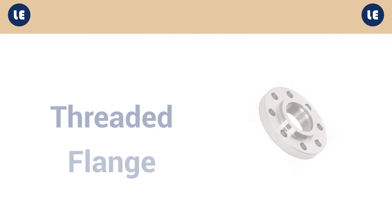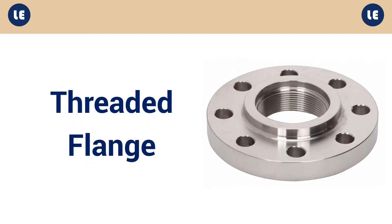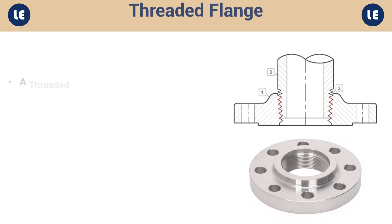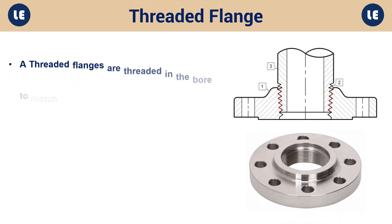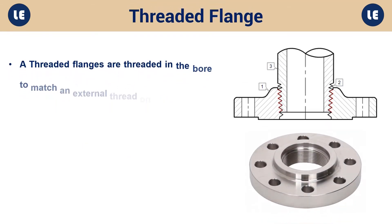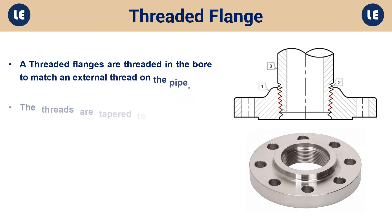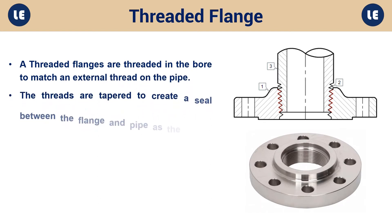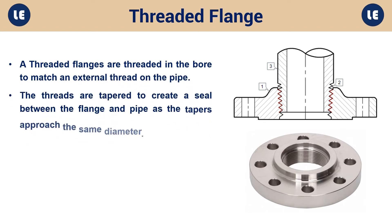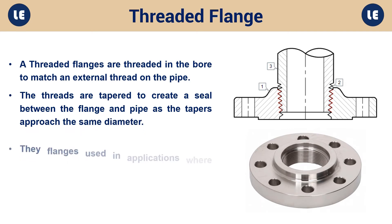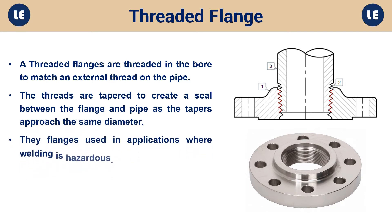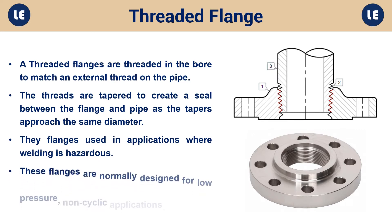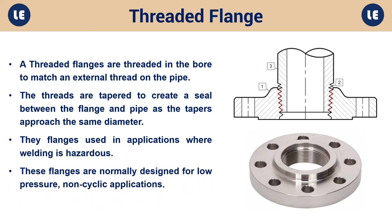Threaded flange: The threaded flanges are threaded in the bore to match an external thread on the pipe. The threads are tapered to create a seal between the flange and pipe as the tapers approach the same diameter. A threaded flange is used in applications where welding is hazardous. These flanges are normally designed for low pressure, non-cyclic applications.